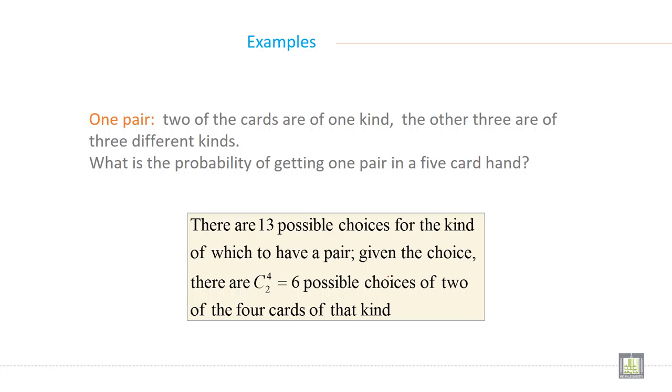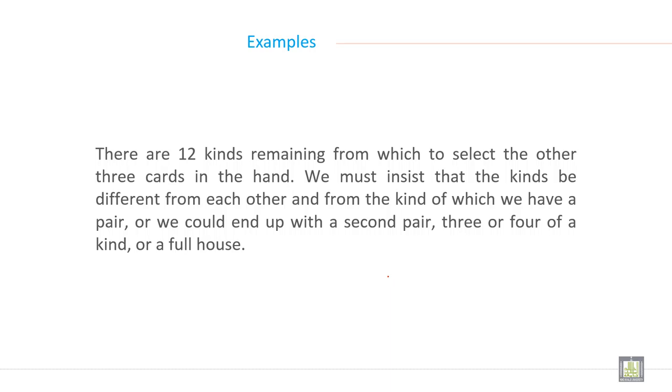There are 13 possible choices for the kind of which to have a pair. Given the choice, there are C(4,2) = 6 possible choices of 2 of the 4 cards of that kind.